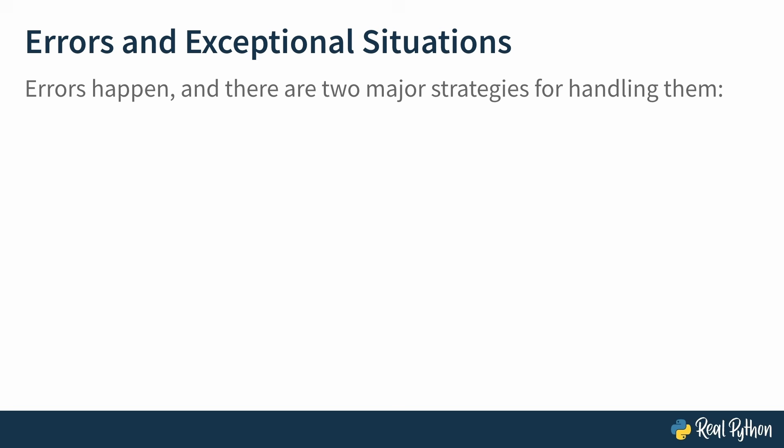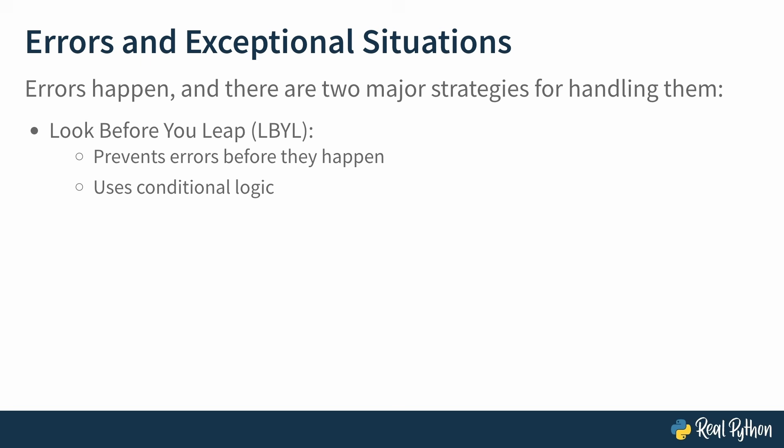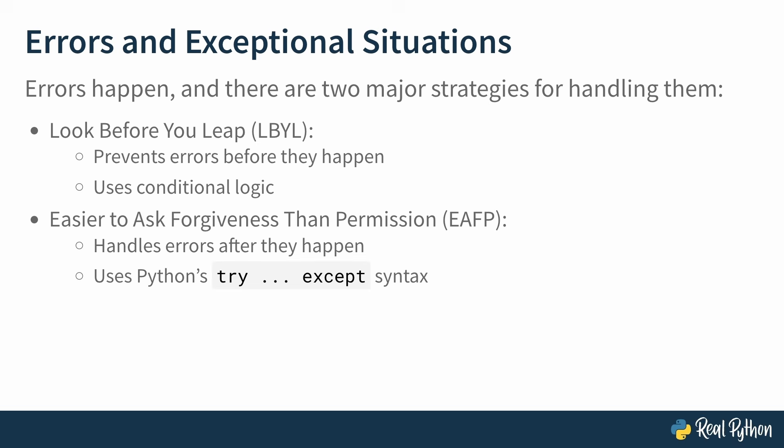In this course, we'll talk about two of the major strategies for handling errors in Python. The first is look before you leap, also called LBYL. This style seeks to prevent errors before they happen and typically uses conditional logic. The second is easier to ask forgiveness than permission, also called EAFP. This style handles errors after they occur and uses Python-specific try-except syntax.